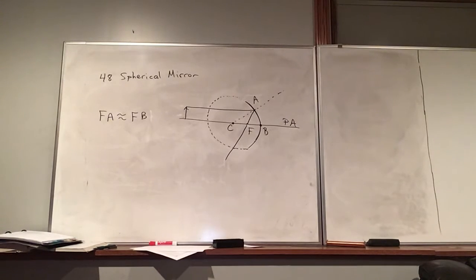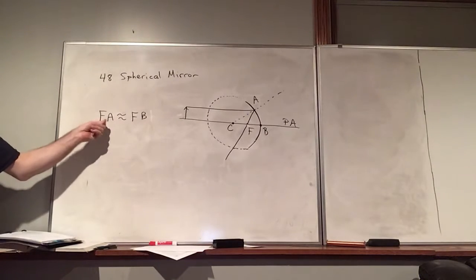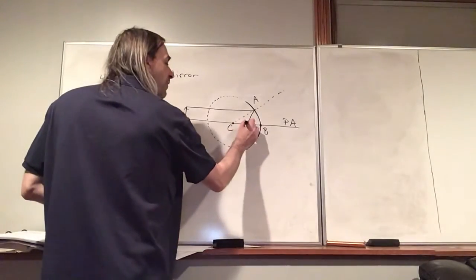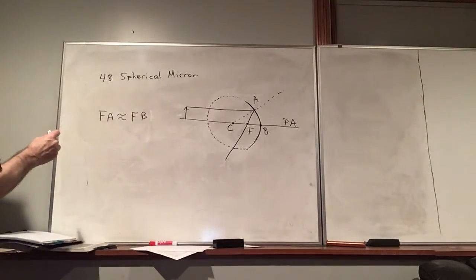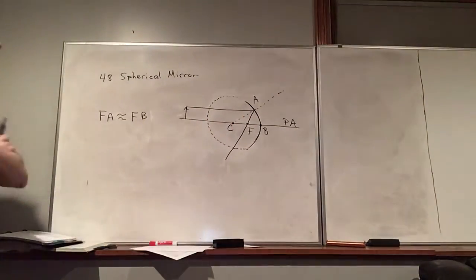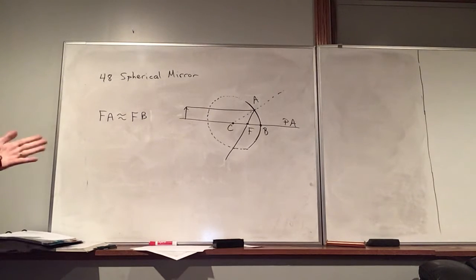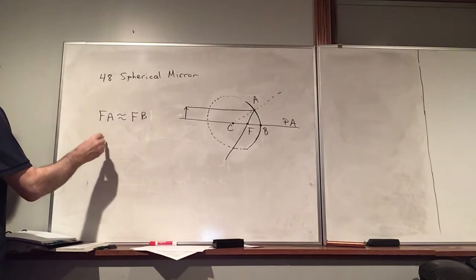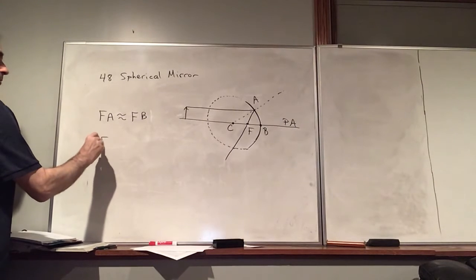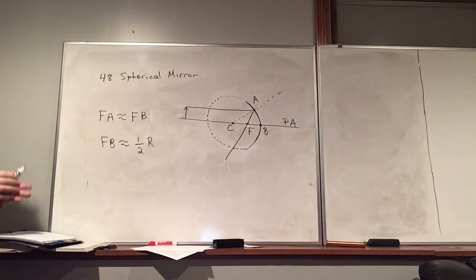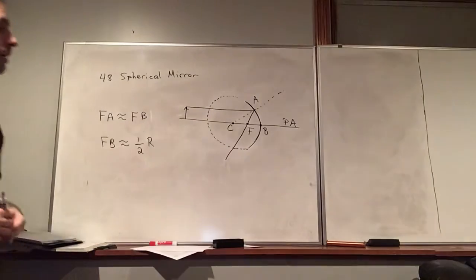As long as our rays are close to the principal axis, this is a good approximation. And if that's the case, we can see that point F is going to occur right in the middle, right in between the center and point B. So FB is approximately equal to one half the radius of the circle or the sphere that this mirror is made from.